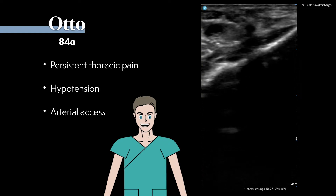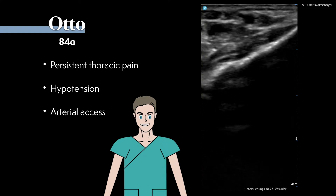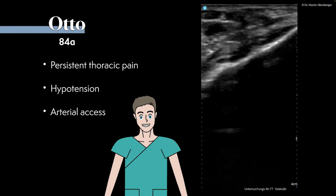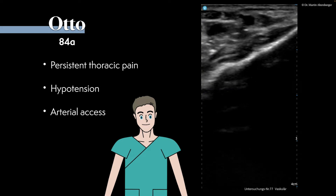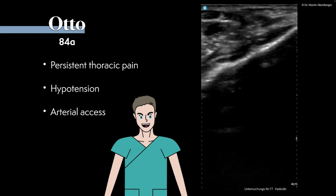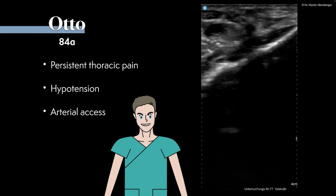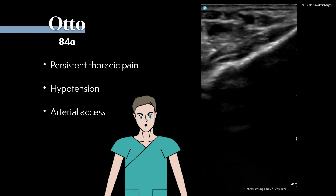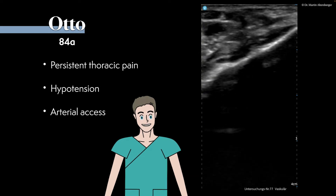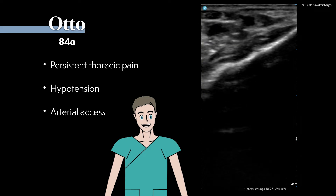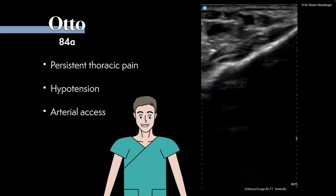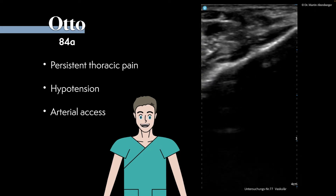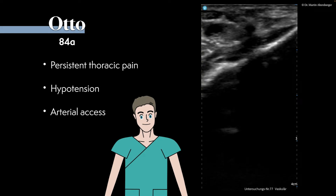Another patient I want to show you is Otto. Otto is 84 years old. He has persistent chest pain for some hours. He's hypertensive, and in this loop you can see the radial artery — this is placing an arterial access.